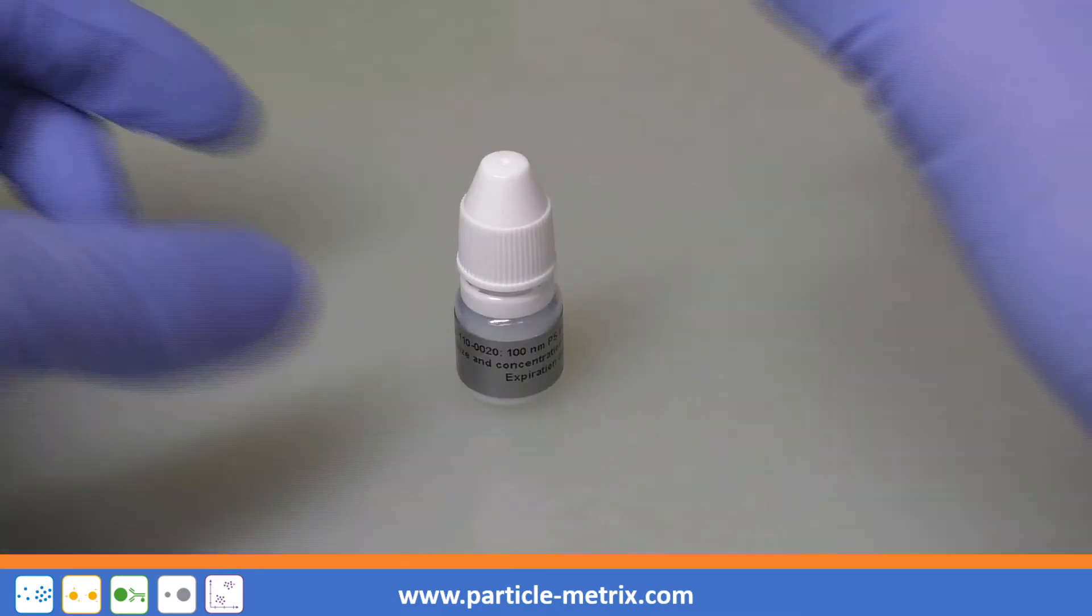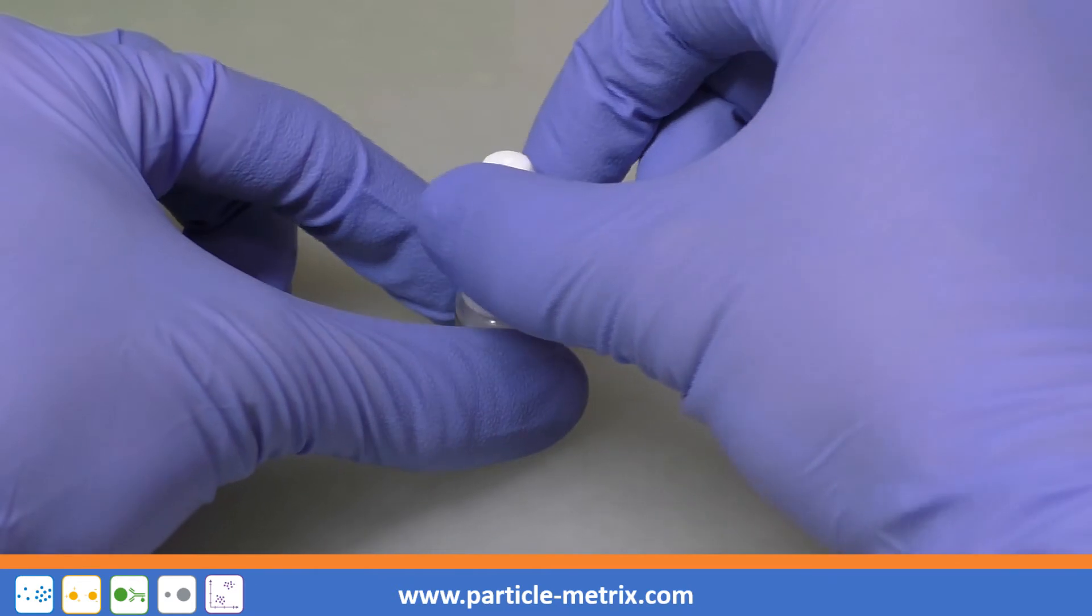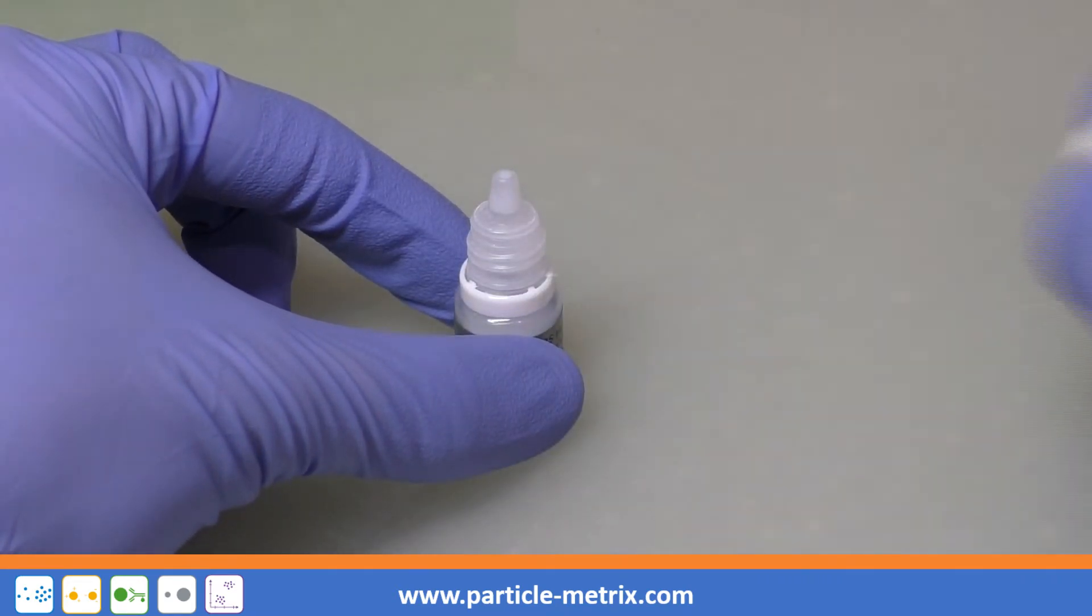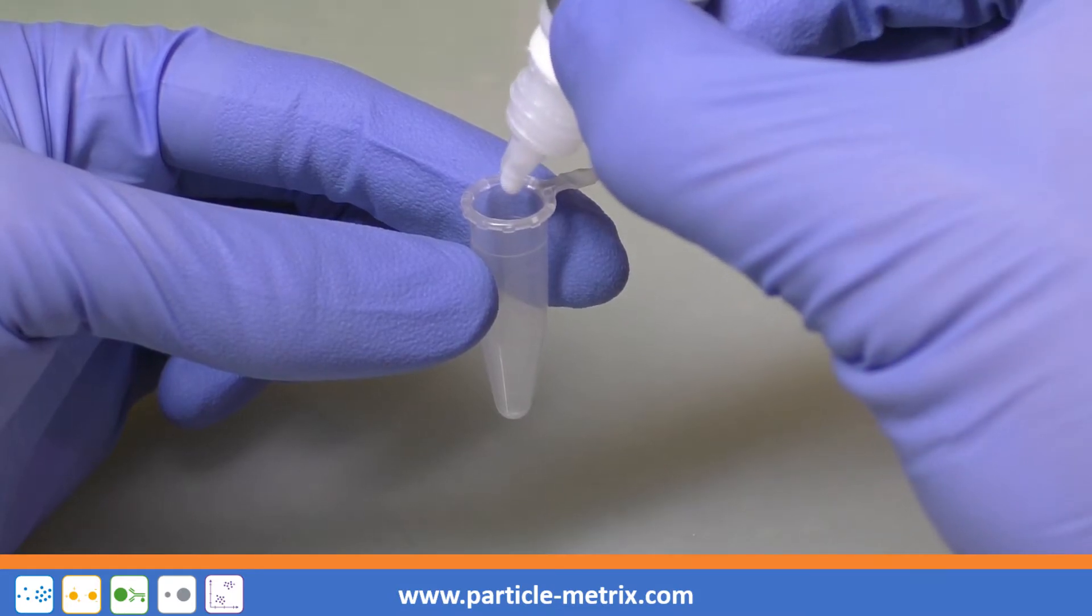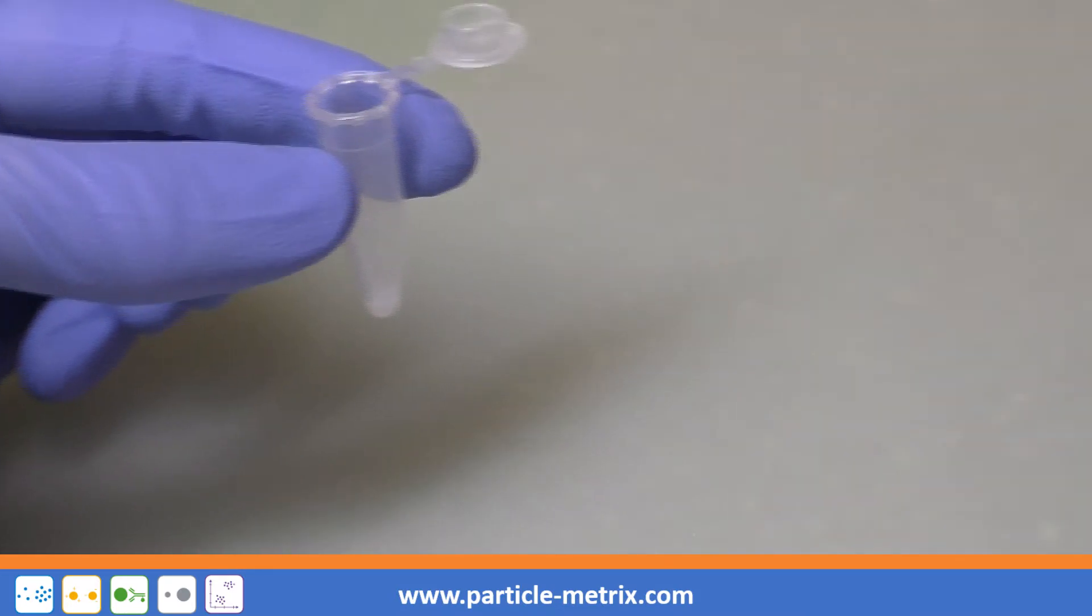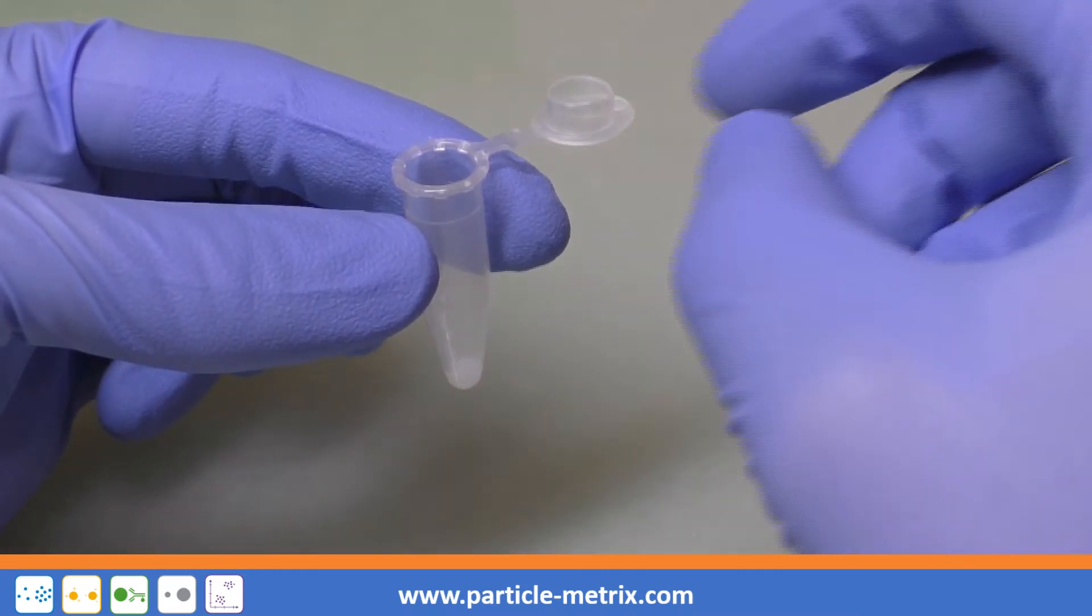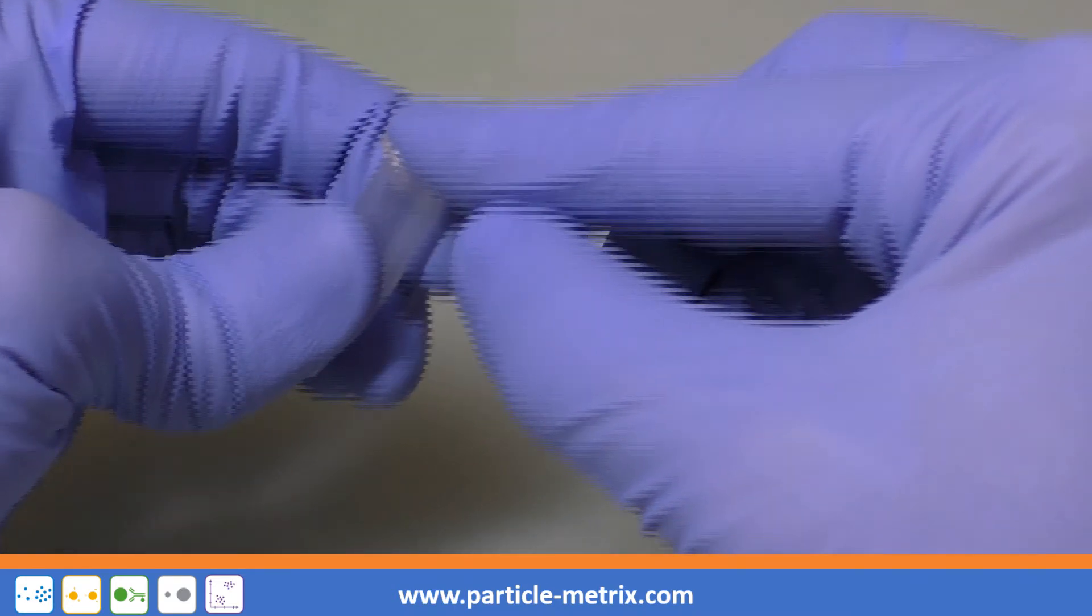The 100 nm polystyrene particles are supplied as a concentrated solution in a dropper bottle. To maintain the stability and sterility of the standard solution, first put a drop of the original solution in a suitable reaction tube.